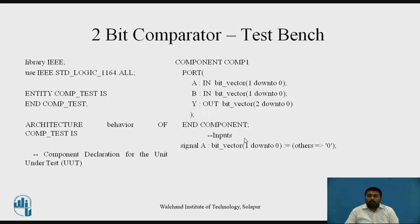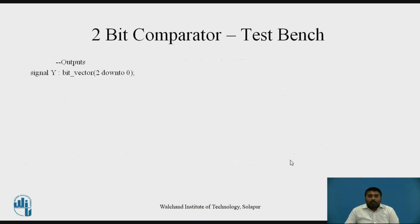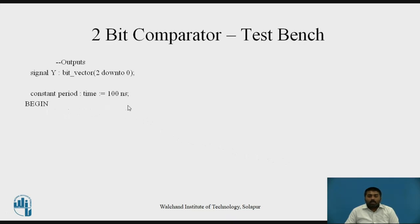Then we write the signals that are going to be mapped with the component signals. The signal declaration part includes: input signal A of type bit_vector, range 1 down to 0, with initial value 0 0; B again range 1 down to 0; and output Y as bit_vector range 2 down to 0. One constant is also declared with a value of 100 nanoseconds, representing the period. Then begin starts the actual architecture.